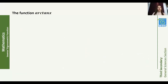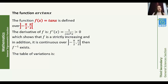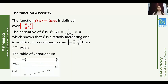Finally, we study arc tan x. The function f(x) = tan(x) is defined over the open interval (−π/2, π/2). Note that tan(x) is not defined at x = ±π/2. The derivative f'(x) = 1/cos²(x) is strictly positive, so f is strictly increasing and continuous over this open interval, and f⁻¹ exists. Table of variations of f: x ∈ (−π/2, π/2), f' is positive, and f(x) is strictly increasing from −∞ to +∞.